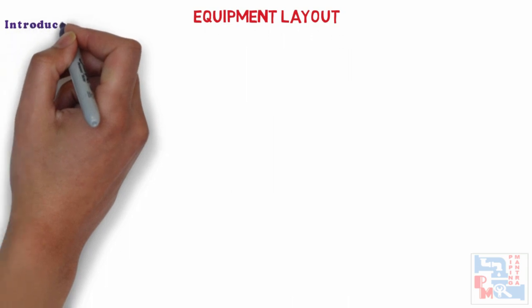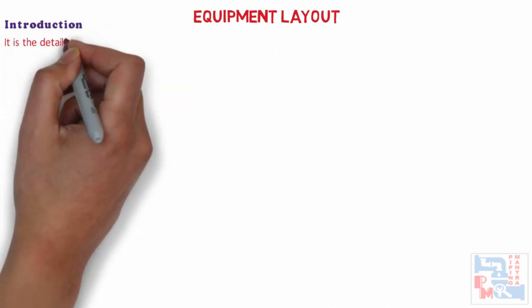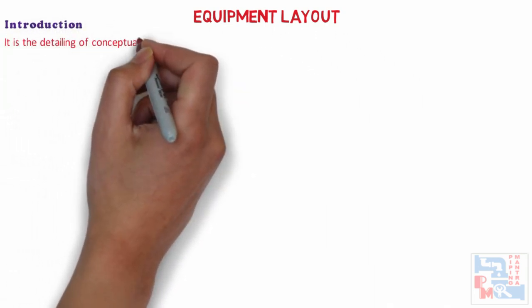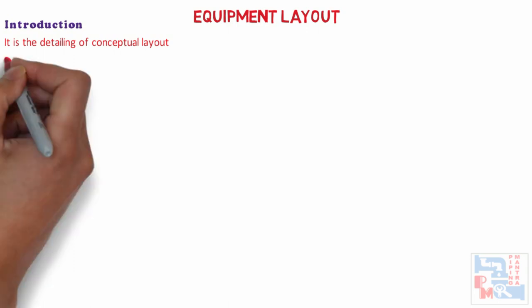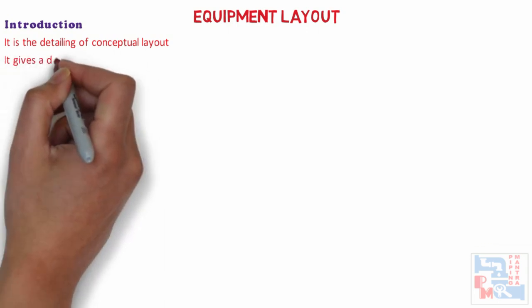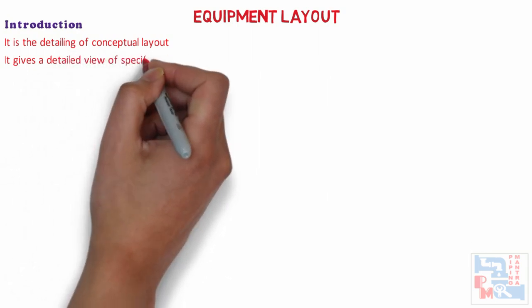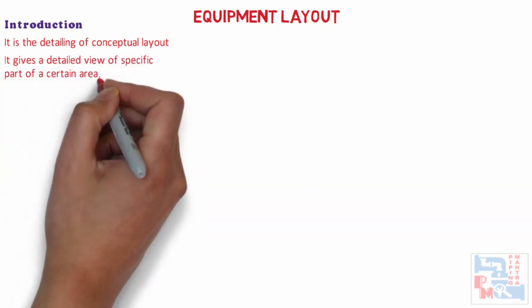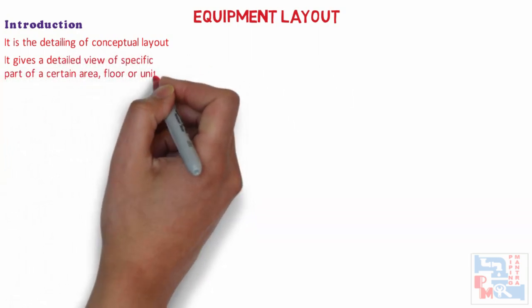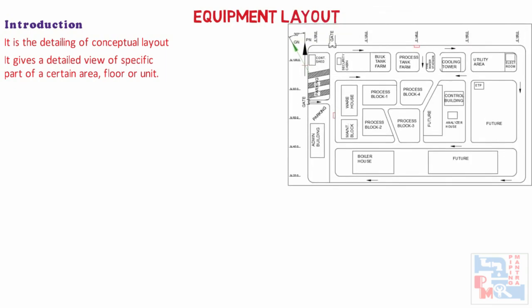And Piping Layout, built on the Equipment Layout, shows all the connected piping as per P&ID. Now let's see what is an Equipment Layout. It is the detailing of the Conceptual Layout. In contrast with the Overall Plot Plan, an Equipment Layout or Unit Plot Plan gives us a detailed view of a specific part of a certain area, floor, or unit from the whole plant.